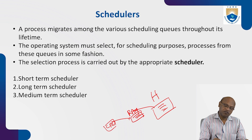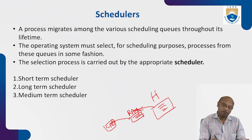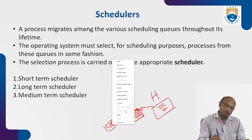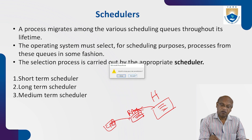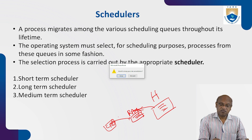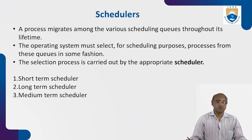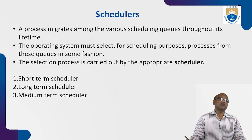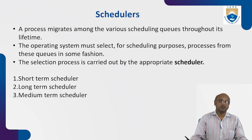There is a program working behind the scenes to bring the program from hard disk to RAM, and from RAM to CPU. If the process requires any I/O resources, it will go back to the waiting state. All these things are done by the scheduler. The scheduler is a program available in the OS that is responsible for moving what needs to be executed from hard disk to RAM and RAM to CPU.